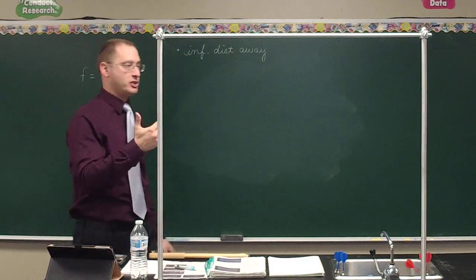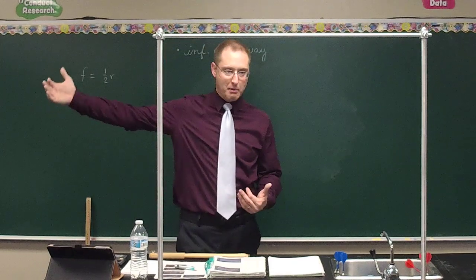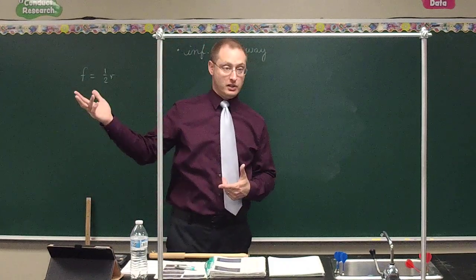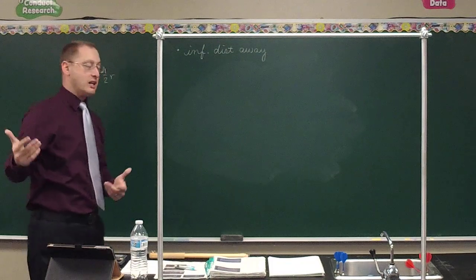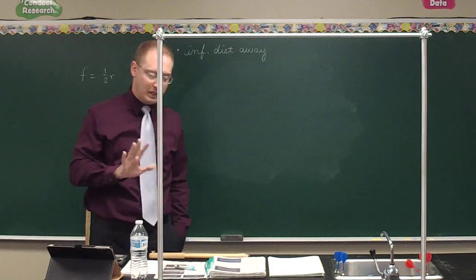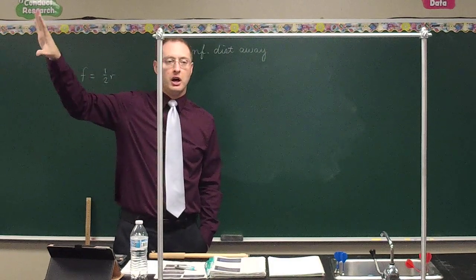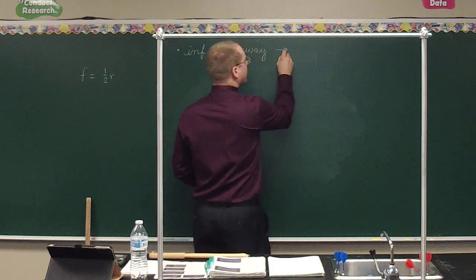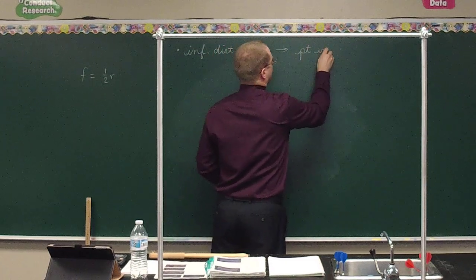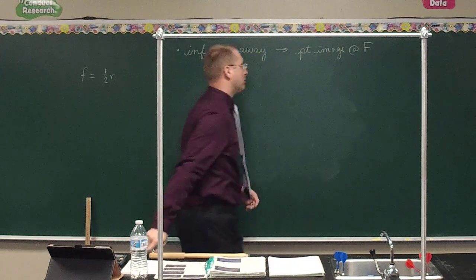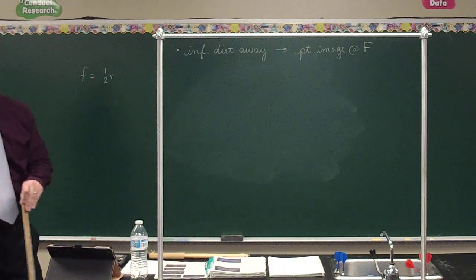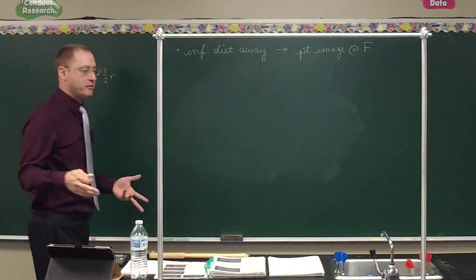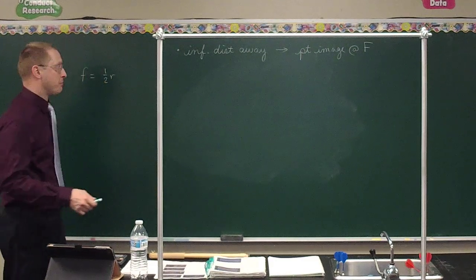If it's a light source like the sun at an infinite distance away, you'll see something because light reflects off. You'll get just a little dot of light called a point image at the focal point. Again, 'infinite' doesn't mean literally infinite — just really, really far away from the mirror.